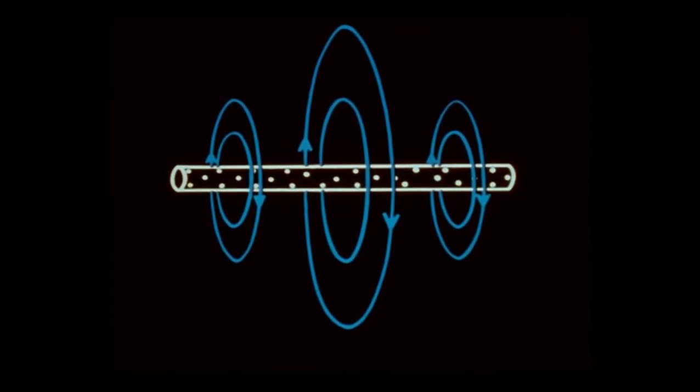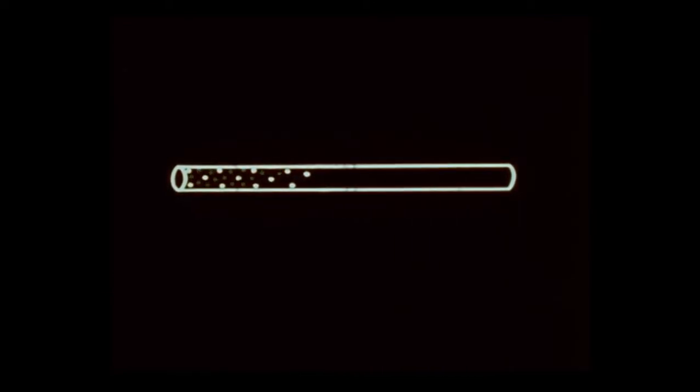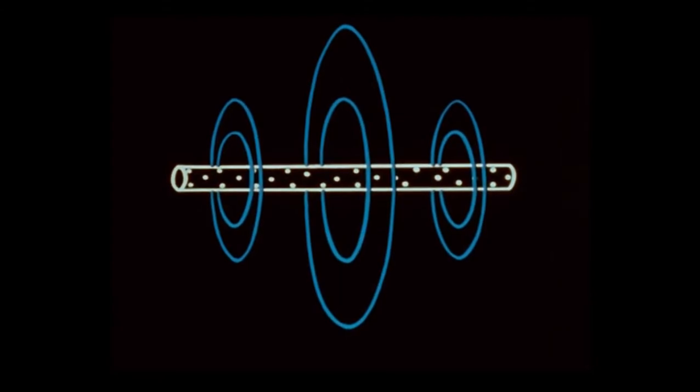When the flow stops, the lines of force collapse. As the flow reverses, the field again reaches a maximum. The lines of force are now in the opposite direction.